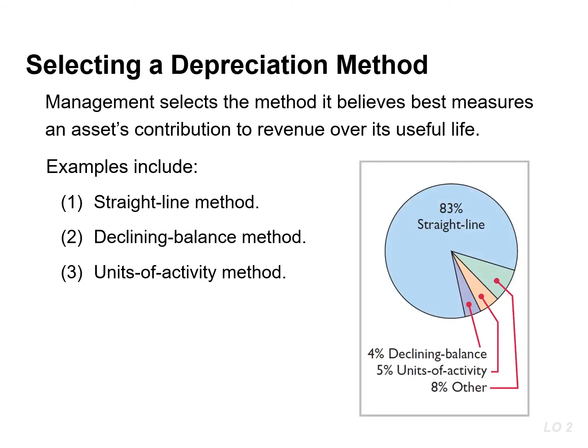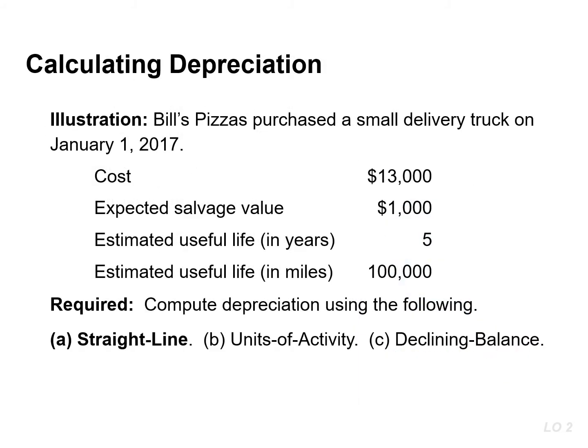Straight line is the most widely used method of depreciation. We will illustrate the three depreciation methods using this information. To calculate straight line depreciation, we need the cost, which is $13,000, the salvage value, which is $1,000, and the estimated life, which is 5 years.